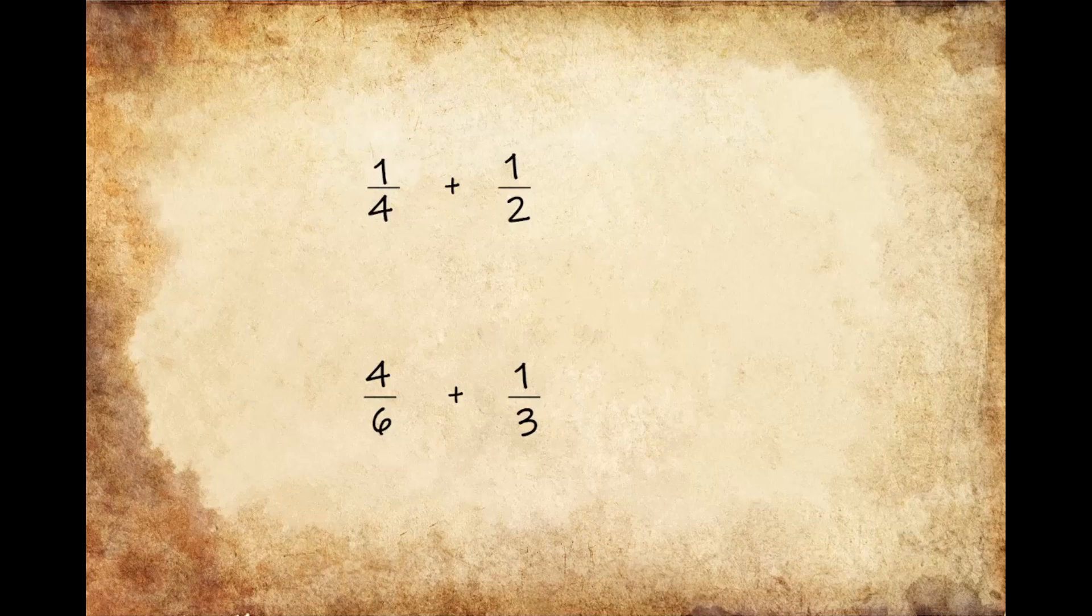So here we can see that we have 1 quarter plus 1 half. And in order to find a common denominator, we're going to go ahead and multiply 4 times 2. And we know that 4 times 2 gives us 8, so our new denominator written down below is going to be 8 for both of the fractions.